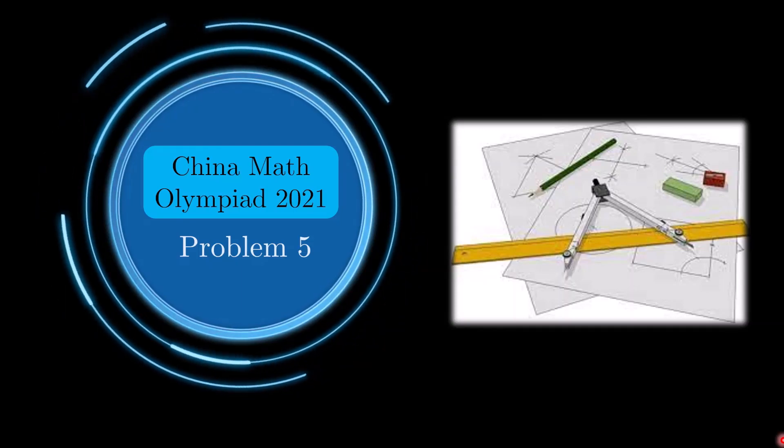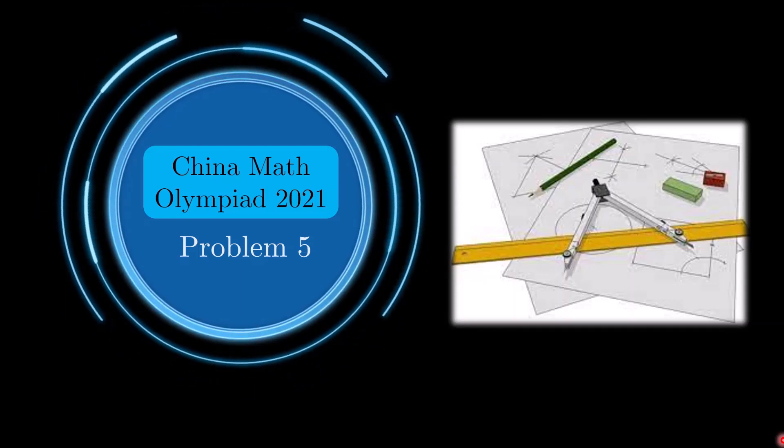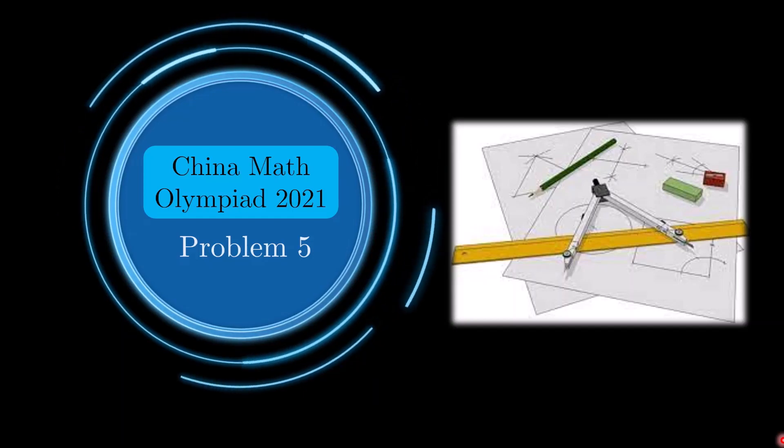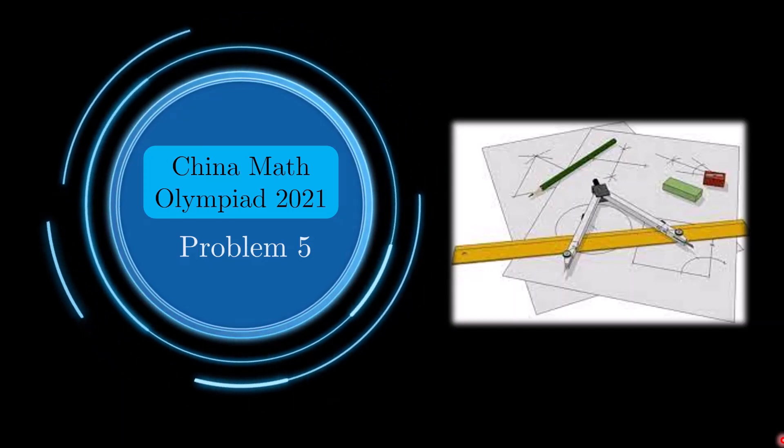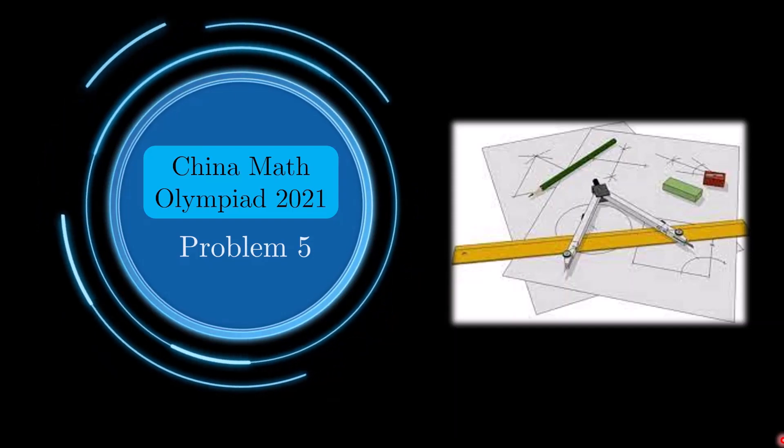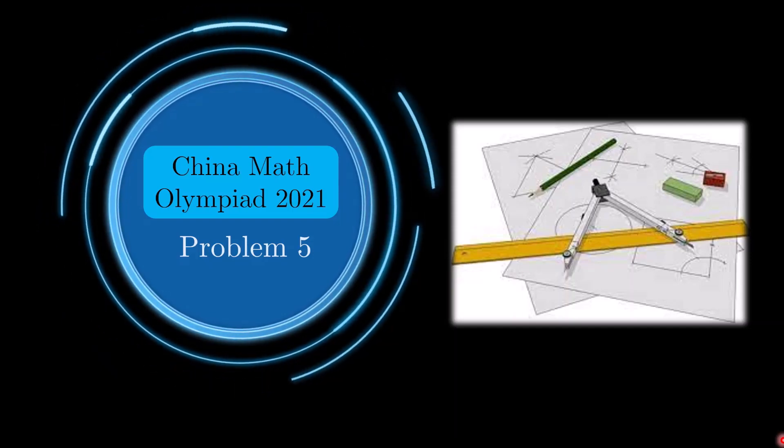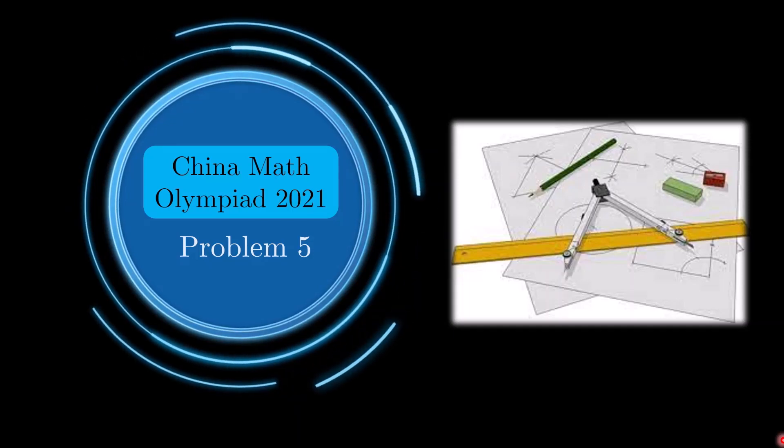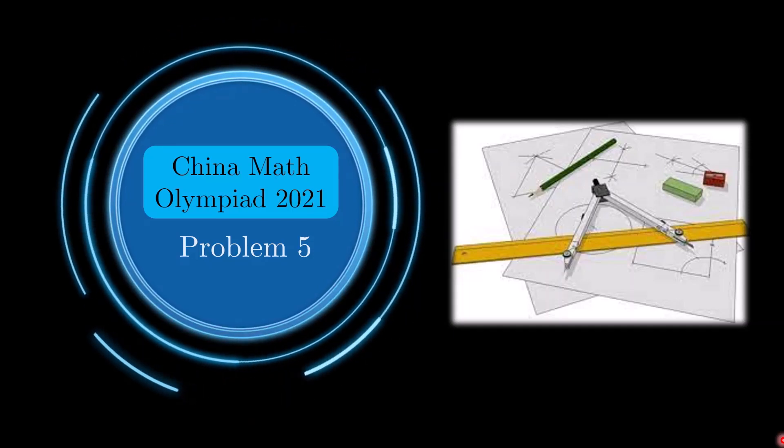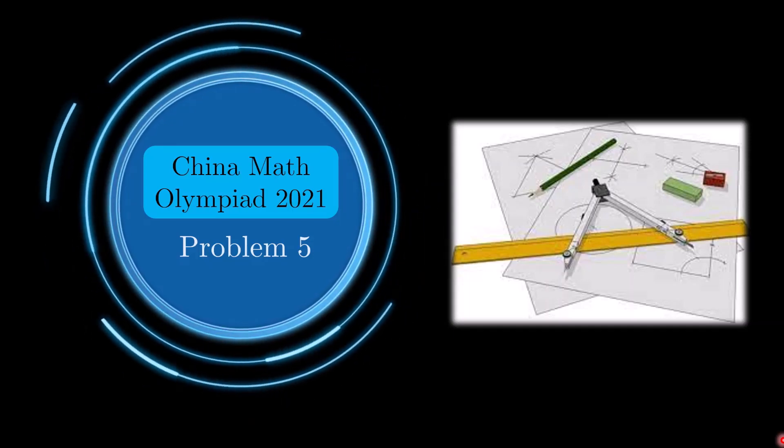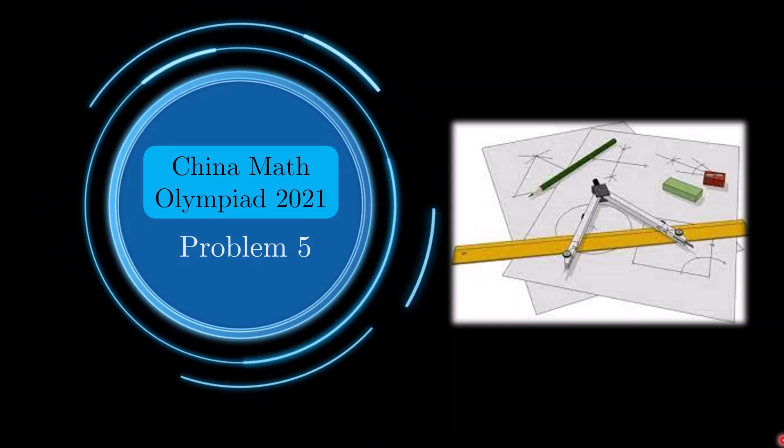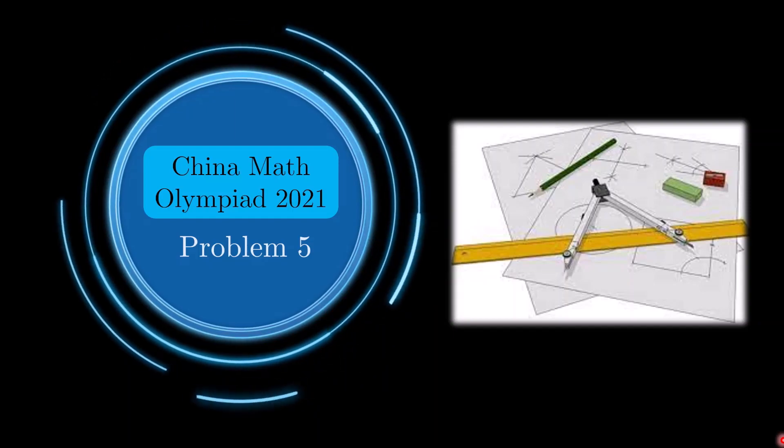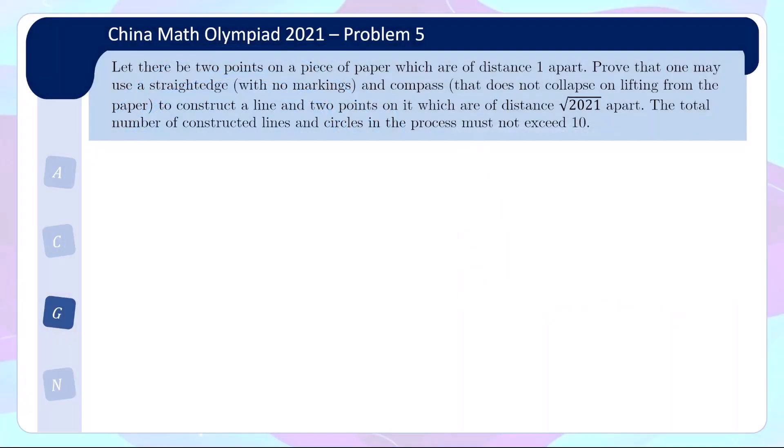Hello everyone, welcome back to another video on the China Math Olympiad 2021 which was just held last week. In this video we'll be looking at problem 5, which is an unconventional geometry problem. If you have been following my channel, I've actually uploaded a video before on the straight edge and compass problem and that will greatly help in understanding this problem. But if you have not checked out the video, that's okay too. We can go through this problem as it is. So let's take a look at what this problem is.